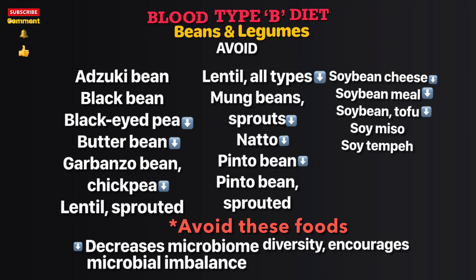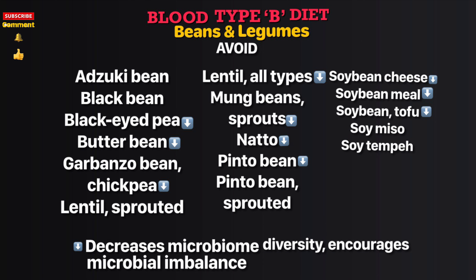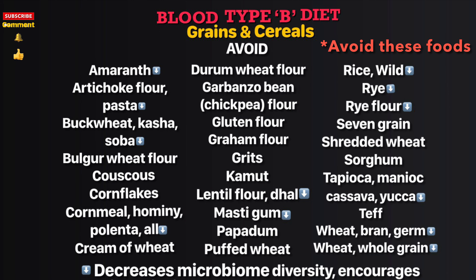Beans and legumes to avoid: azuki bean, black bean, black-eyed pea, butter bean, garbanzo bean (chickpea), lentil, sprouted lentil (all types), mung beans (all types), mung bean sprouts, natto, pinto beans, sprouted pinto beans, soy bean cheese, soy bean meal, soy bean tofu, soy miso, and soy tempeh.